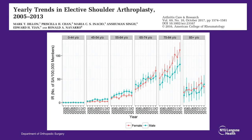Total shoulder arthroplasty is now performed with increasing frequency. In the United States, the incidence of total shoulder arthroplasty has increased from 6.1 per 100,000 patients to 13.4 per 100,000 patients within 8 years.